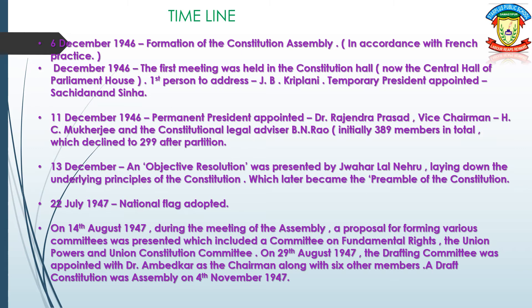The assembly had 389 members in total, which declined to 299 after partition. On 13 December 1947, an Objective Resolution was presented by Jawaharlal Nehru, laying down the underlying principles of the constitution, which later became the Preamble of the Constitution.